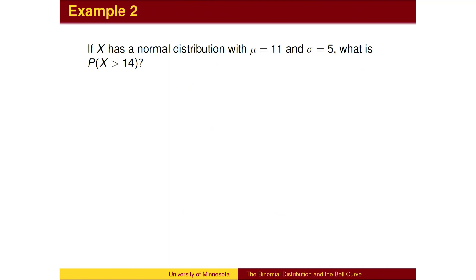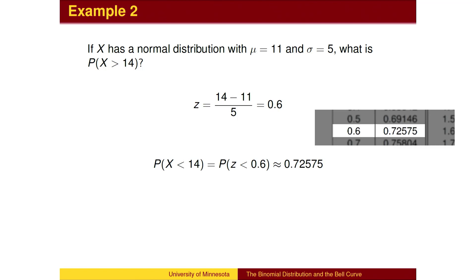Here is another example. First, we compute the z-score for the value x equals 14. 14 is 0.6 standard deviations above the mean of 11. We then use the table to find the percent of the population below the z-score of 0.6. The table only gives the population below the line.